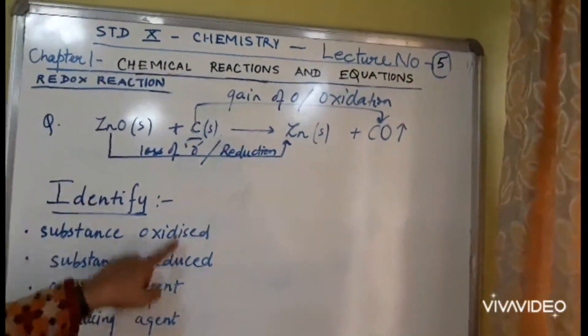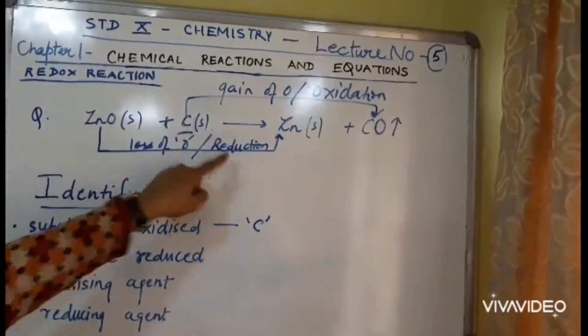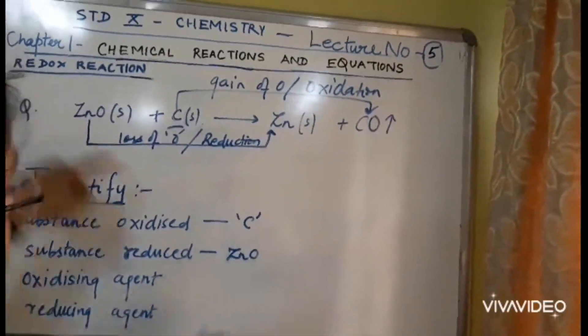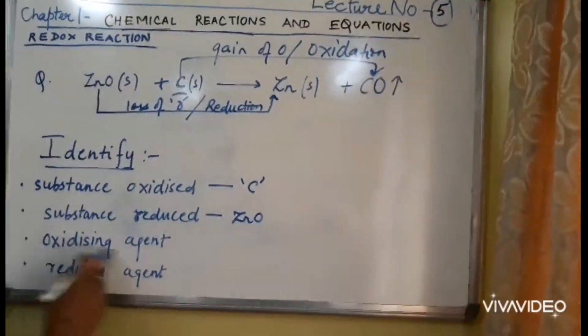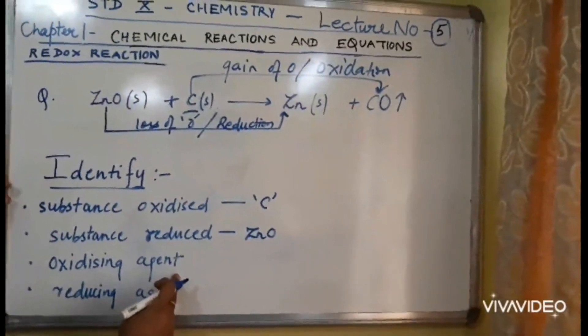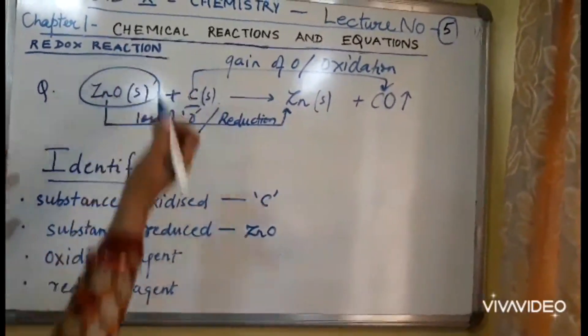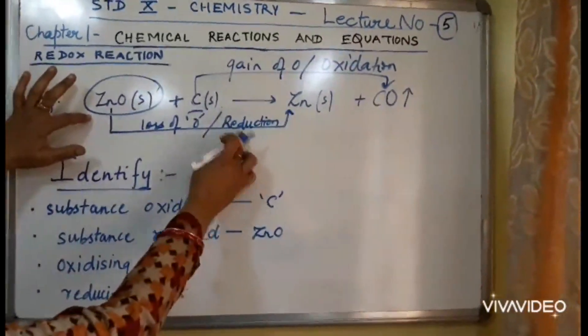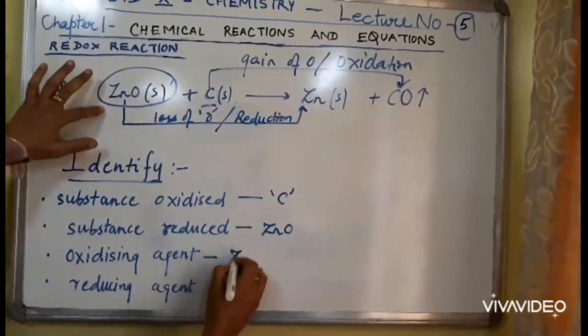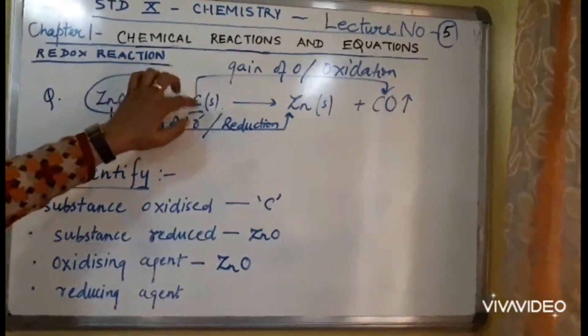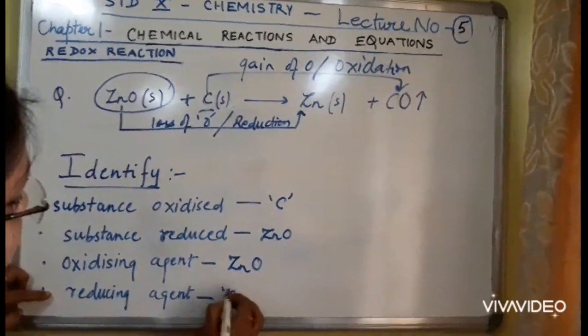So, look at the questions now. Substance oxidized is carbon. Substance reduced, reduction kis ka ho raha hai? ZnO ka. Dekho, dono hi reactant side mein hai. Dhyan dena. Oxidizing agent. Now, the substance which is reduced, what is the substance reduced? ZnO. So, ZnO, since it is reduced, it is helping this to get oxidized. So, ZnO is the oxidizing agent. And the substance which gets oxidized acts as reducing agent, once again carbon.